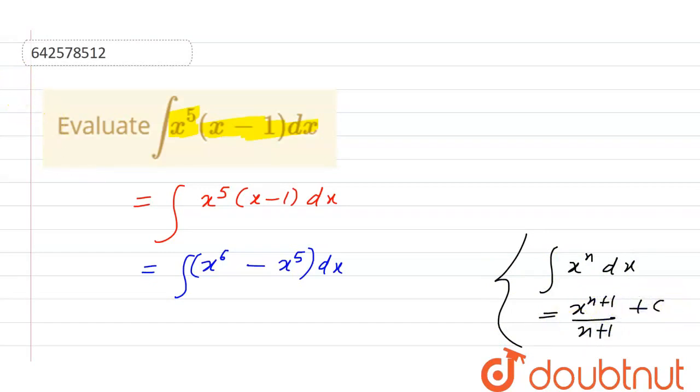Here we have x raised to the power 6, which is equal to its power increased by 1 divided by the increase in power plus 1, minus x raised to the power 5 plus 1 divided by the increase in power plus c.